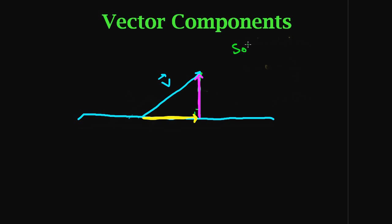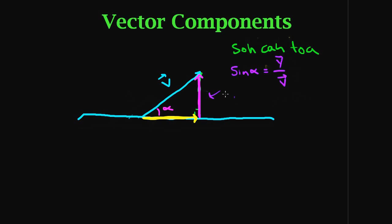From trig we know SOH-CAH-TOA. Let's say the dolphin came out of the water at some angle alpha and we want to know the magnitudes of the components. The vertical component is the opposite side, so we use sine: sine of alpha equals the opposite side Y over vector V. Therefore Y equals V sine alpha. That's its magnitude; its direction is j-hat, meaning the y direction. Don't worry about that for now — just focus on how to break it into x and y components.